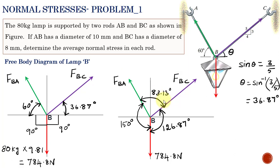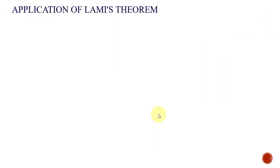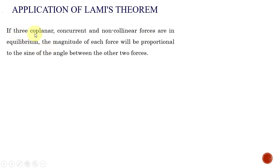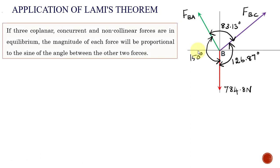Now we are going to apply Lamy's theorem. Lamy's theorem states that if three coplanar, concurrent, and non-collinear forces are in equilibrium, then the magnitude of each force is proportional to the sine of the angle between the other two forces. To apply Lamy's theorem the configuration must satisfy certain conditions. First, there must be three forces — in our case FBA, FBC, and 784.8 Newton.